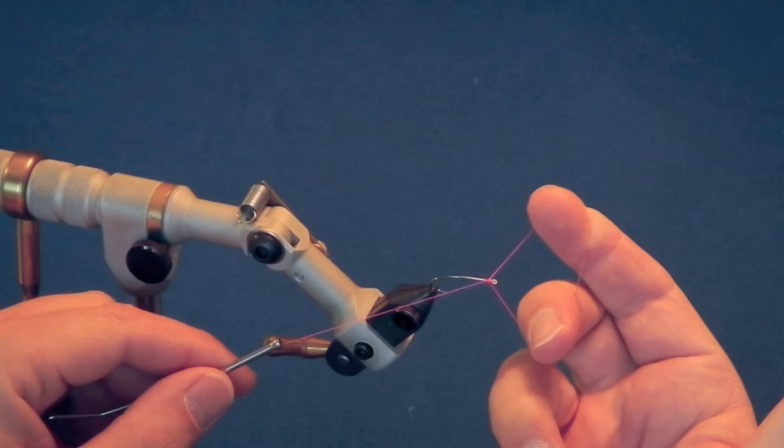Push the loop away from you so that it traps the thread coming from the bobbin holder against the hook shank. Keep your left hand with the bobbin holder on your side of the hook and maintain gentle tension.